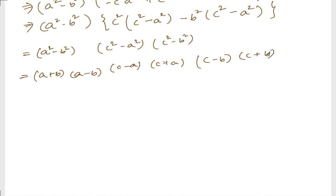So I can arrange this as a plus b, a minus b, c plus a, c minus b. These are all the factors according to the book — you can arrange them as the book has written. Thank you so much. I hope I have written correctly, and if there are any mistakes please write in the comment below. We will meet in the next video.